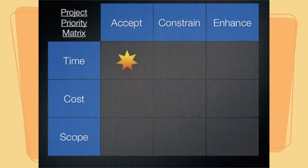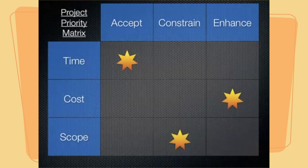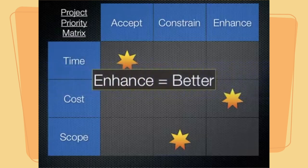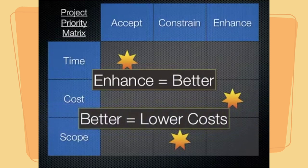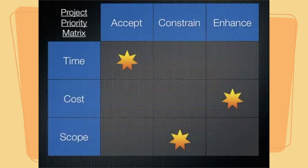Let's look at another example. In this case, we are willing to accept changes in time, we are going to enhance cost, and we are going to constrain the scope. When we say enhance cost, think of it as better — meaning lower costs. So in this example, we are constraining the scope, we would like to reduce cost if possible, and we are certainly willing to accept some delays in project completion if it will, in fact, decrease the cost of the project.